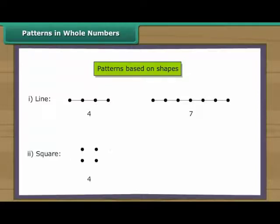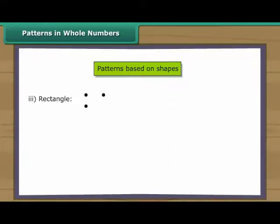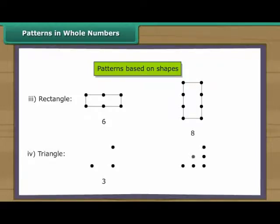Some numbers can be arranged as squares. For example, Some numbers can be arranged as rectangles. Rectangles can be horizontal arrangement or a vertical arrangement. For example, Some numbers can be arranged as a triangle. For example,